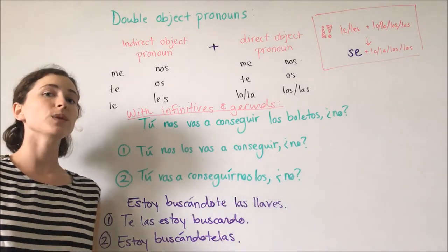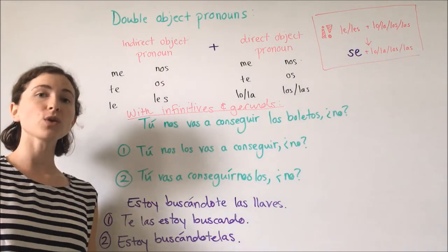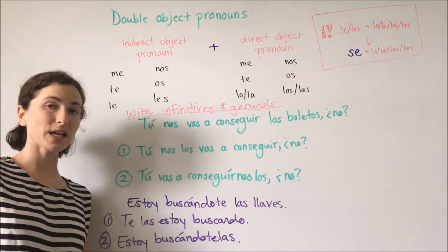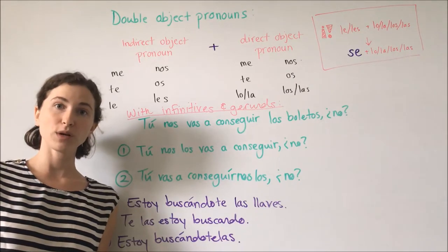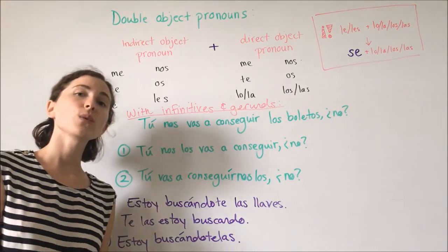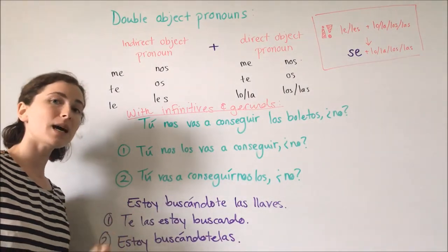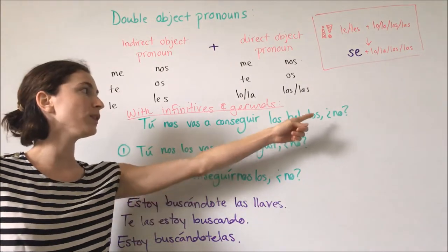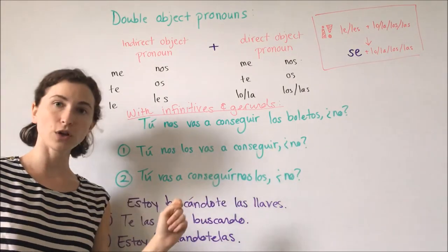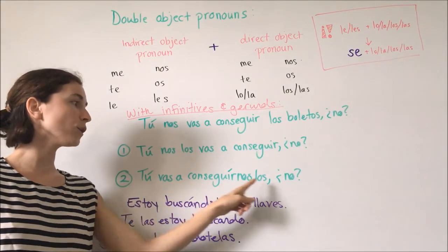Lastly, it is very important to note the placement. Not only does the indirect object pronoun precede the direct object pronoun, but also consider when our verb is conjugated, in infinitive, or in the gerund form. When it is conjugated, put the double object pronouns before the conjugated verb. However, if it is an infinitive or a gerund, we can put the double object pronouns at the end. For example, 'Tú nos vas a conseguir los boletos' can change to 'Tú nos los vas a conseguir,' or 'Tú vas a conseguirnoslos.'